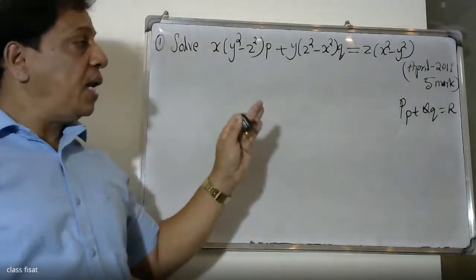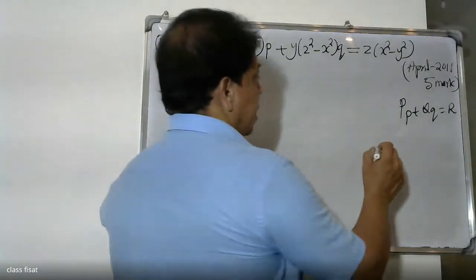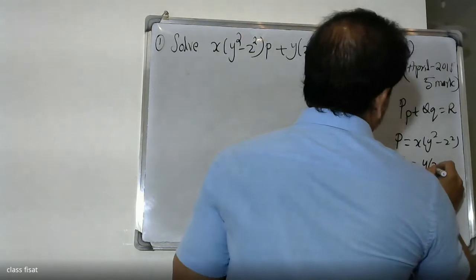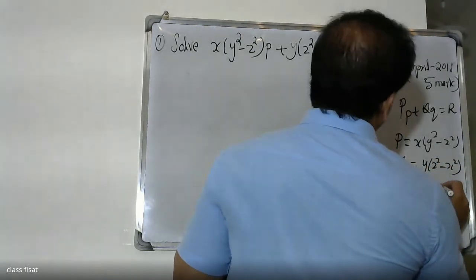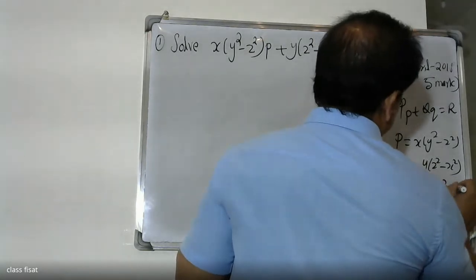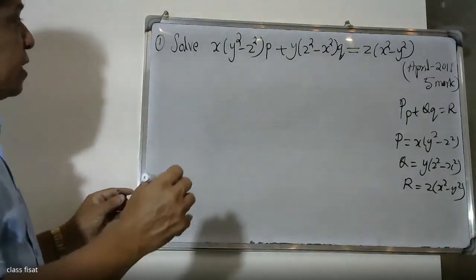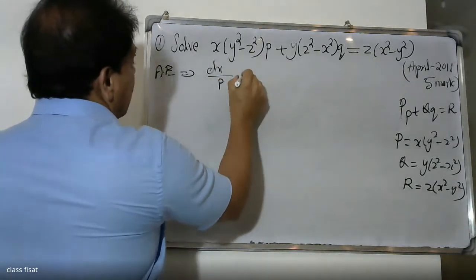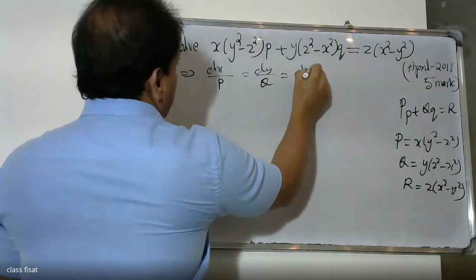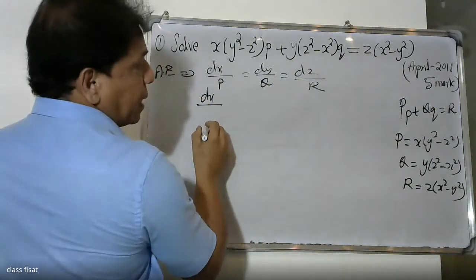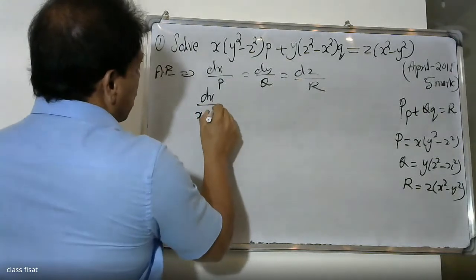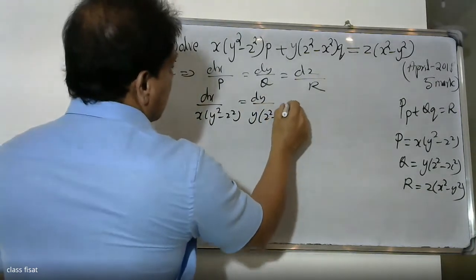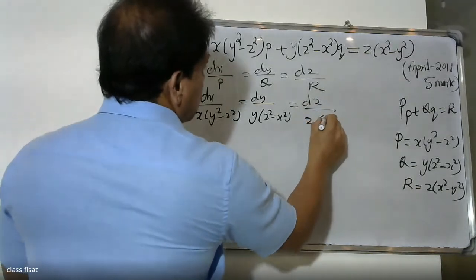For this first order Lagrange's linear equation, we identify P = x(y² - z²), Q = y(z² - x²), and R = z(x² - y²). The auxiliary equations are dx/P = dy/Q = dz/R, that is dx / [x(y² - z²)] = dy / [y(z² - x²)] = dz / [z(x² - y²)].